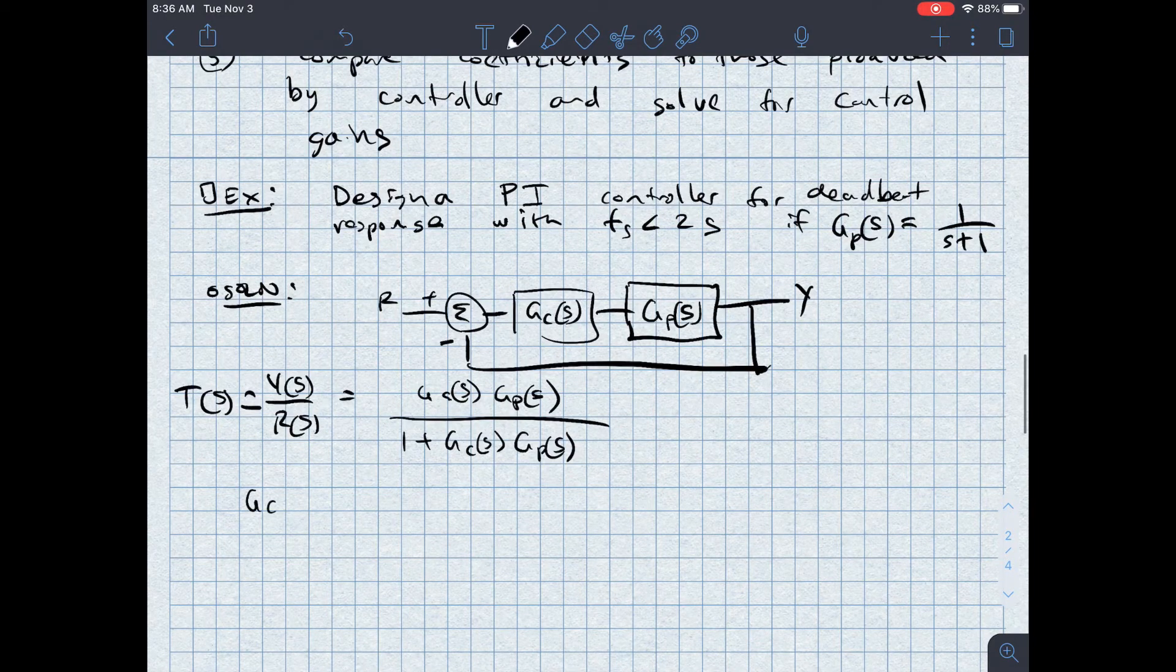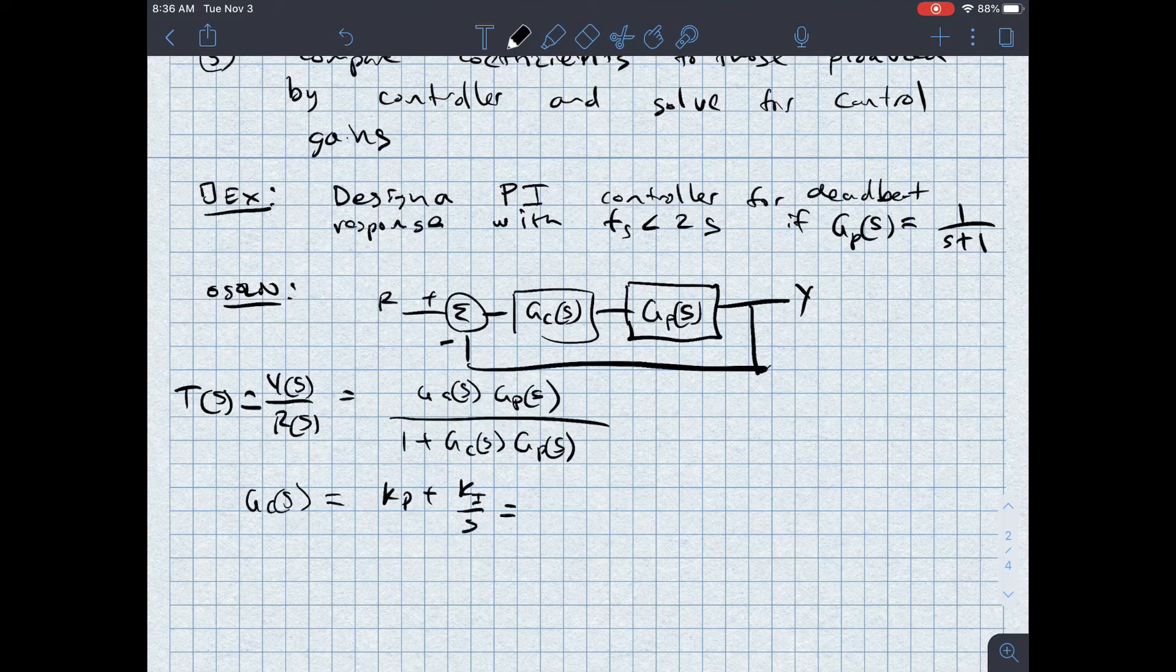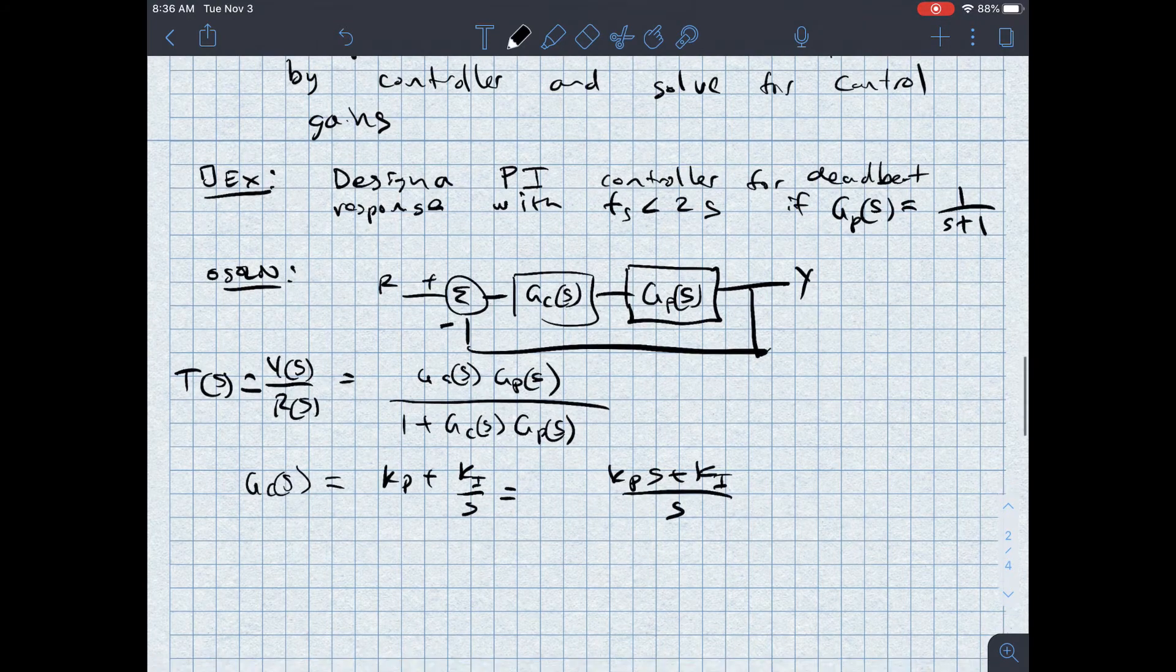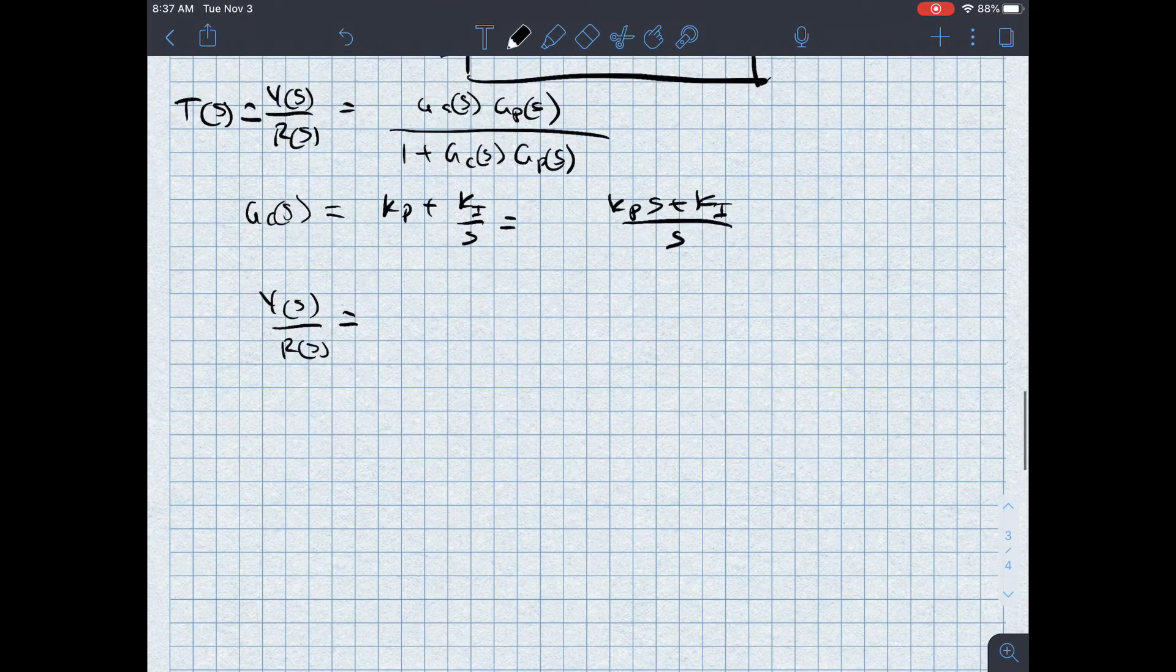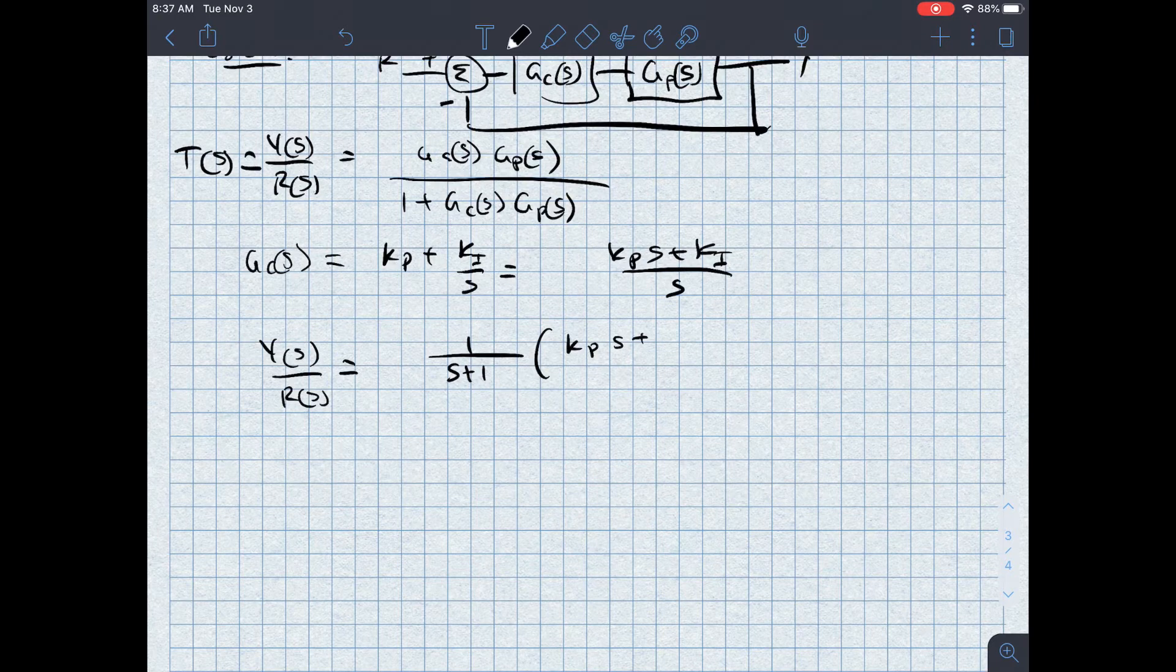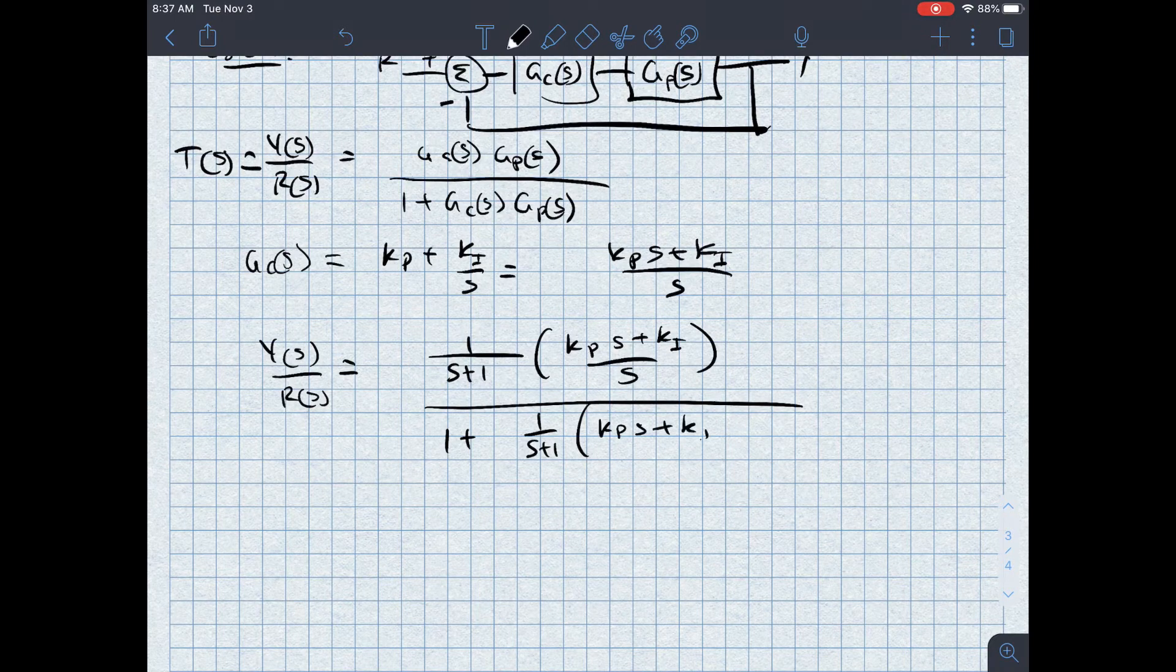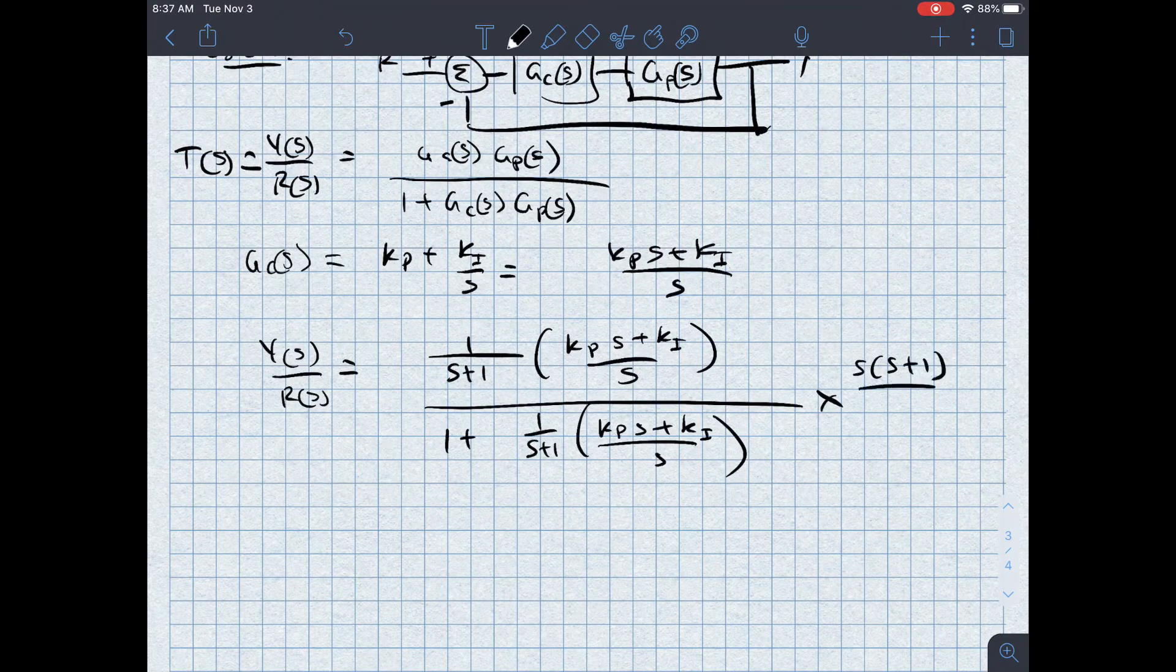I know that GC of S being a PI controller is equal to KP plus KI over S, which is equal to KPS plus KI all divided by S. So if I plug that into my Y of S over R of S, I've got one over S plus one times KPS plus KI over S divided by one plus the same thing, one over S plus one, KPS plus KI over S. If I want to simplify, I'll multiply by S, S plus one, top and bottom.